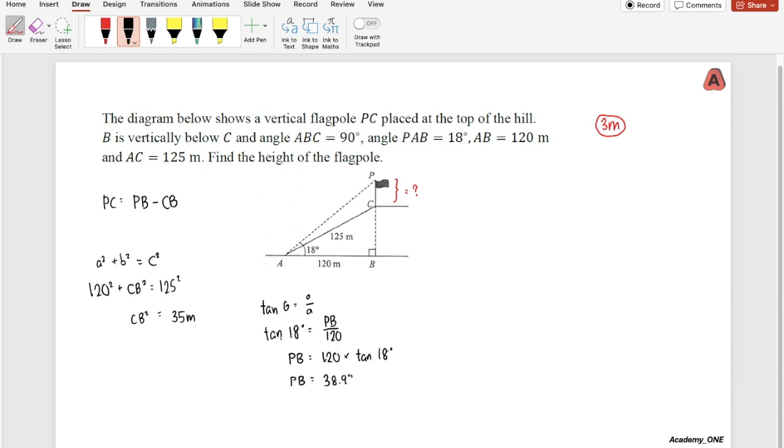Okay, now we have the value for PB and the value for CB. Let's put it into this formula. So in order to find PC, we take PB minus CB.